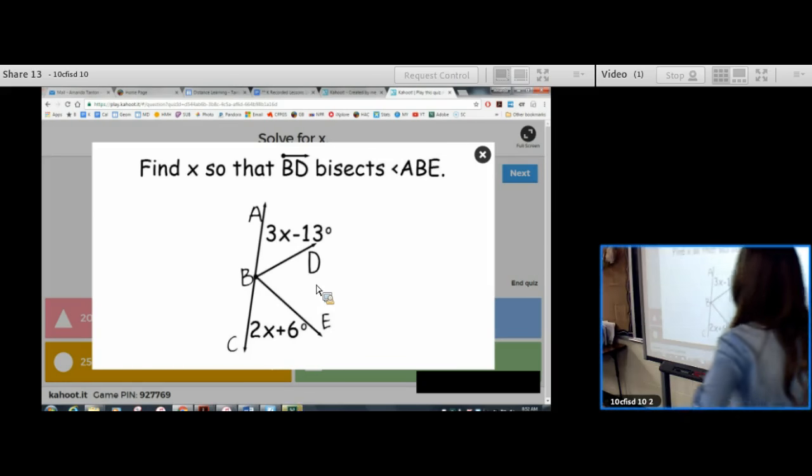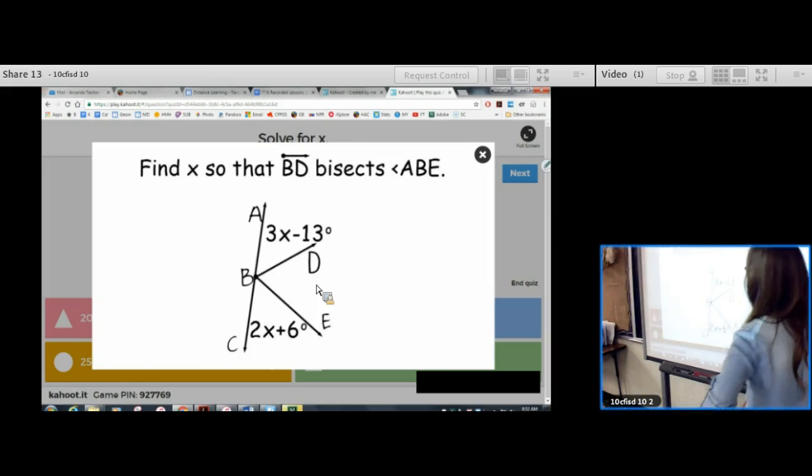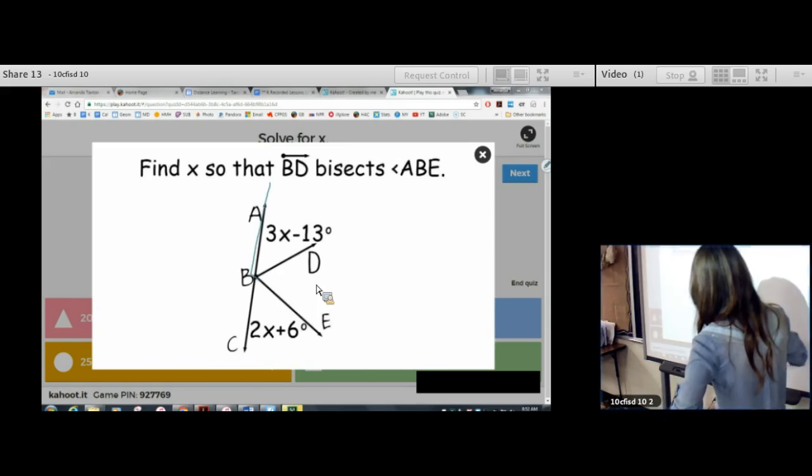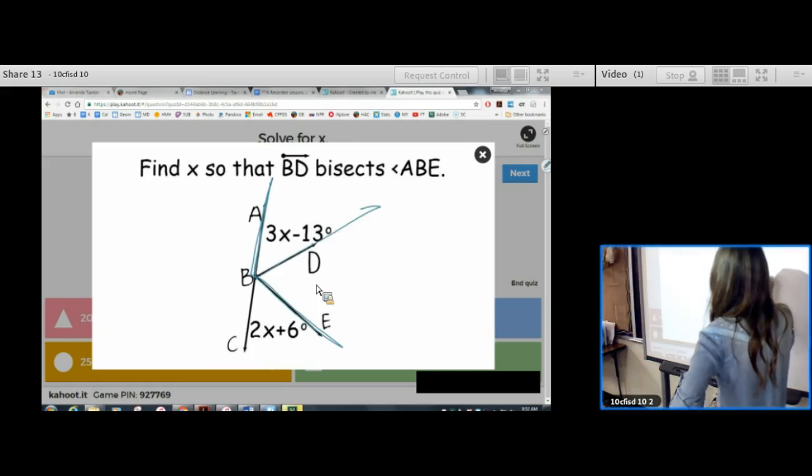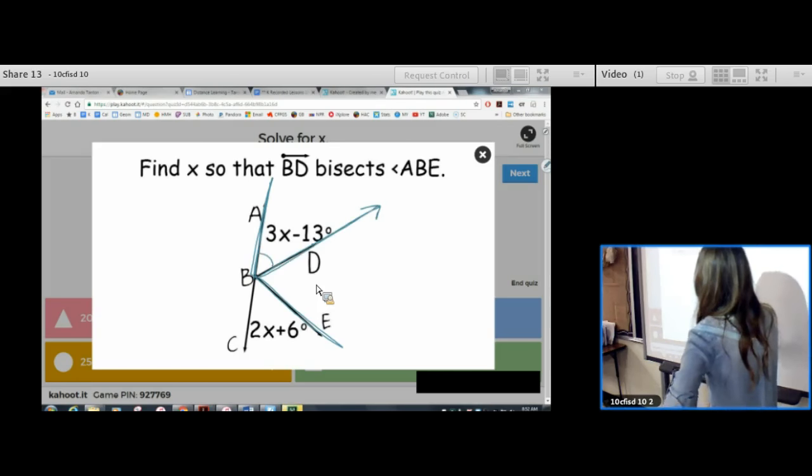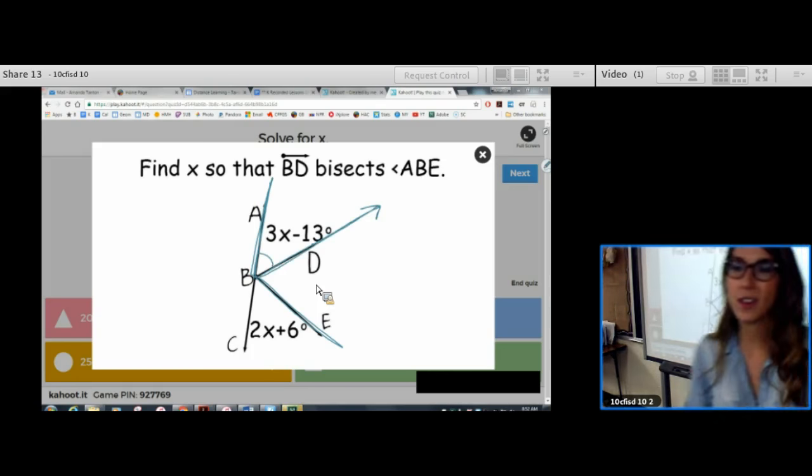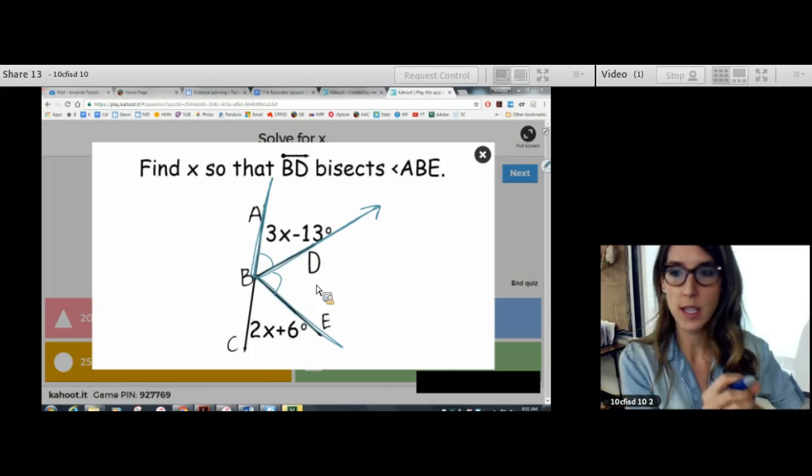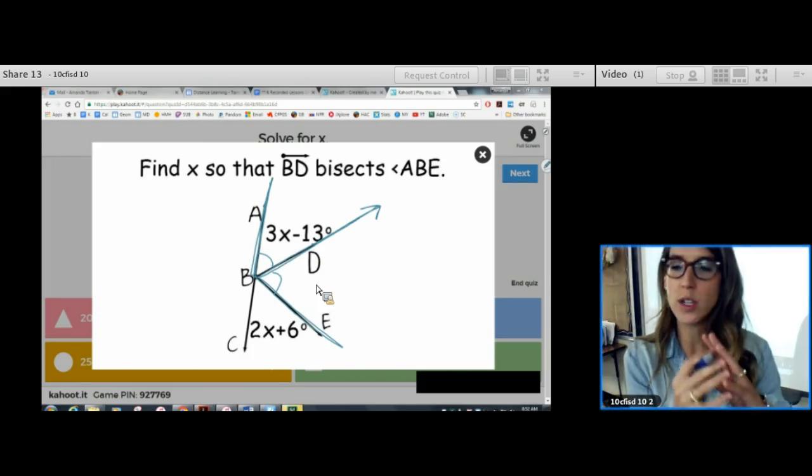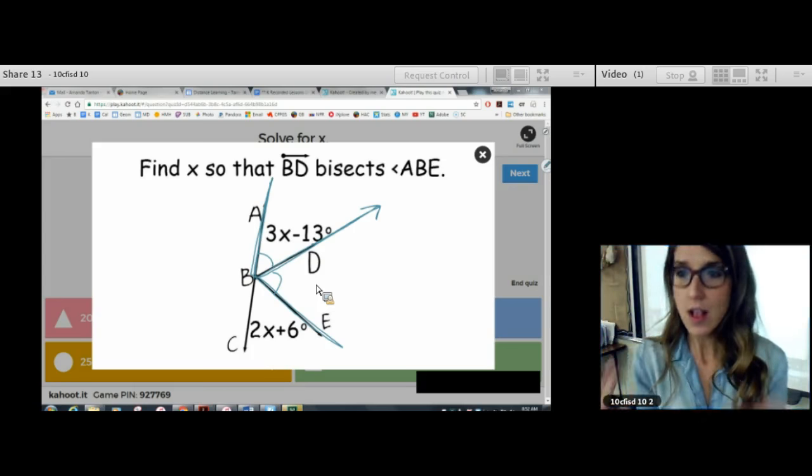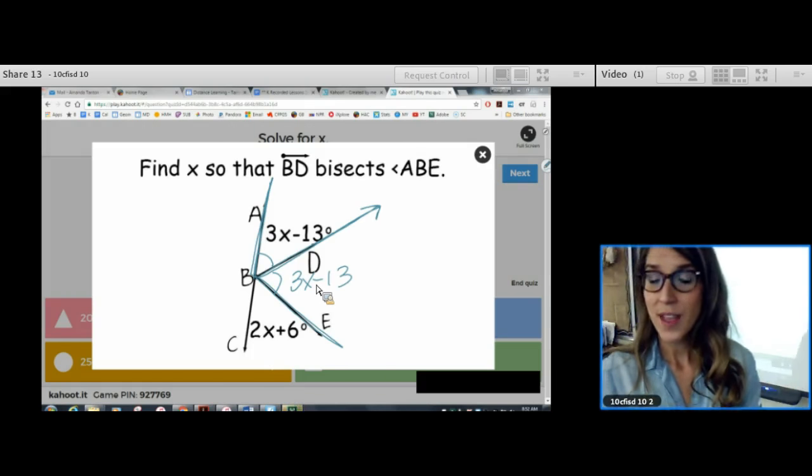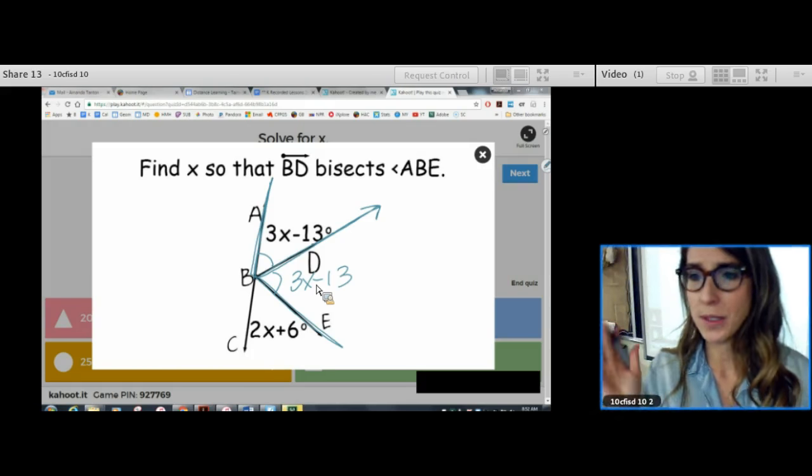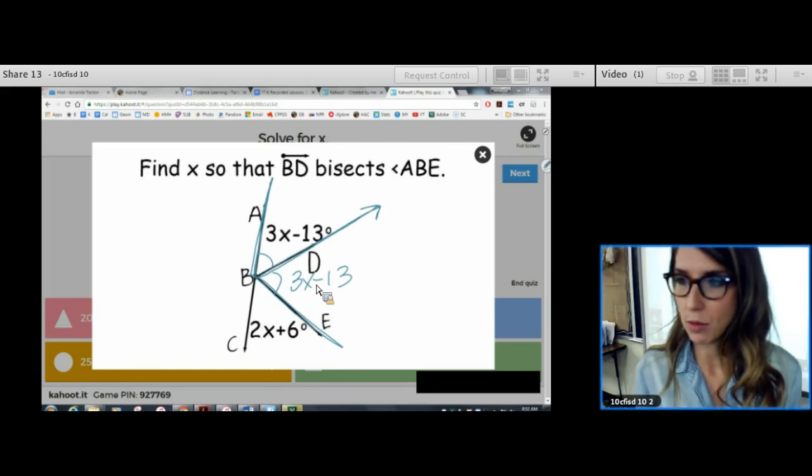Find x so that ray BD bisects angle ABE. So, here's ABE. And we want to force this to be an angle bisector. We want those angles to be congruent. Arc, arc. Force them to be a bisector. Means force the angle to be cut in half. Now, if it's perfectly cut in half, then those would be matching. Those would both have arcs. Those would be twins. So, now what we're going to do is add all these up. But what do we set it equal to?